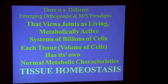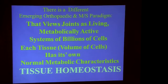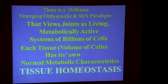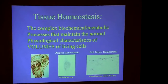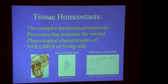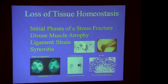There is a different emerging orthopedic and musculoskeletal paradigm that views joints as living, metabolically active systems of billions of cells, where each tissue has its own normal metabolic characteristics. The term we use is tissue homeostasis — the complex biochemical and metabolic processes that characterize volumes of living cells. Loss of tissue homeostasis includes the initial phases of a stress fracture, disuse muscle atrophy, ligament strains, and synovitis.